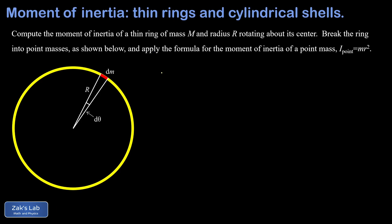To get started on the thin ring calculation, we need a brief reminder on the idea of linear density. Linear density is normally given the Greek letter lambda, and that's just the mass per unit length. It's appropriate to describe the density of this thin ring with a linear density because it's really a one-dimensional object — it happens to be curled up into a circle, but we can talk about its mass per unit length. The units of linear density are kilograms per meter. The mass contained in some length of this object is given by lambda multiplied by that length.